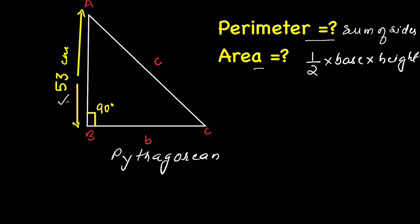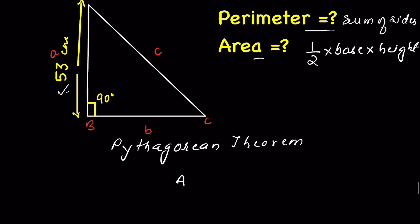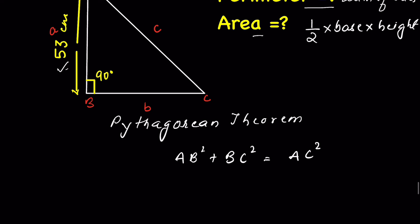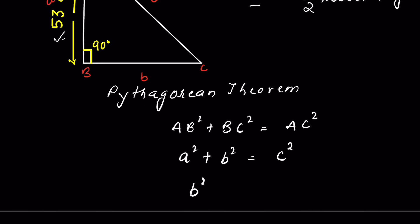Side AC is lowercase c and side AB is lowercase a. As per the Pythagorean theorem, AB² plus BC² is equal to AC², or a² plus b² is equal to c². We can rearrange this to say b² is equal to c² minus a².